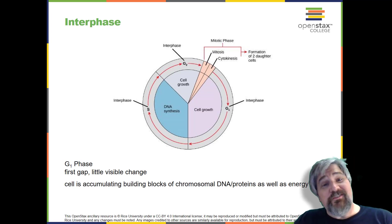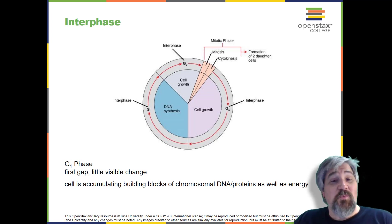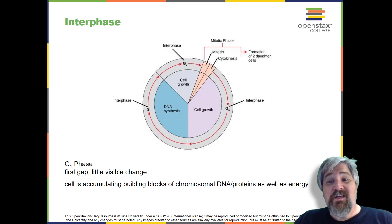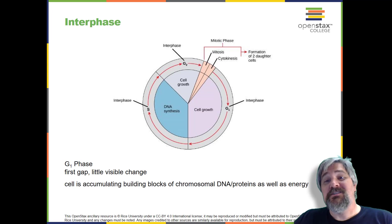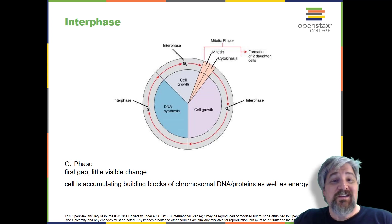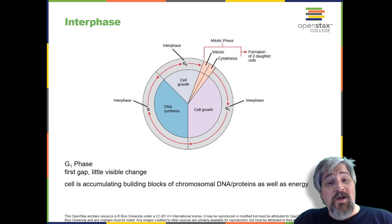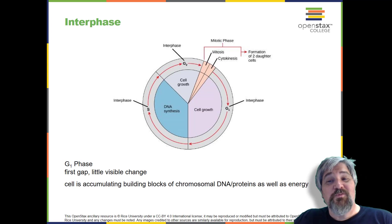G1, the first stage of interphase, is called the G1 phase or first gap because little change is visible. However, during the G1 stage, the cell is quite active at the biochemical level. The cell is accumulating the building blocks of chromosomal DNA and associated proteins, as well as accumulating enough energy reserves to complete the task of replicating each chromosome in the nucleus.